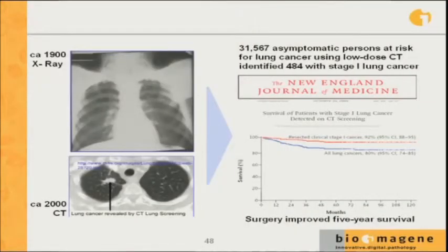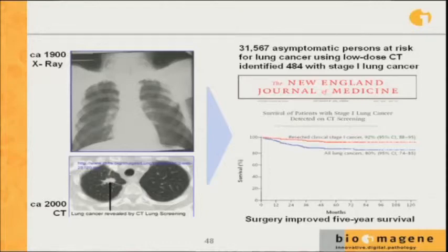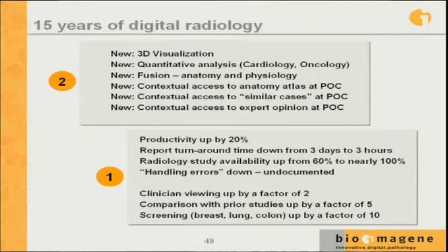The ability to do a test on 31,000 asymptomatic patients and find 500 people who had stage one lung cancer — who could be cured at that stage, where the five-year survival went up by 20 points — could not have been done without digital technology. If we didn't have the ability to mine massive amounts of data to look for patterns, it simply was not possible. In 15 years of radiology going digital: productivity went up by 20%, documented over 1,800 hospitals. Report turnaround time went from three days to three hours, documented over 100 facilities.